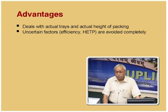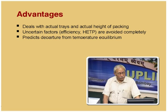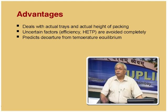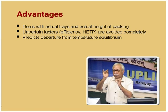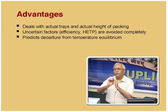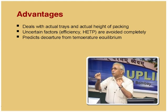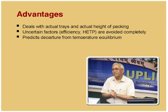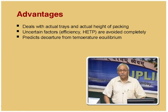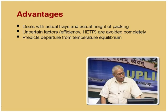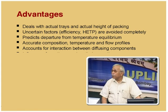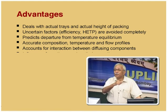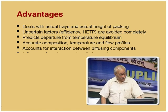Uncertain factors such as efficiency and HETP are avoided; the method predicts departure from temperature equilibrium, which is the actual case in practice. In actual columns, the vapour temperature is always different from the liquid temperature because there is no true thermal equilibrium. The rate-based approach is a rigorous method that accounts for interaction between diffusing components—diffusivities take care of efficiency differences between constituents. Influence of reactions can be handled correctly, and the method is predictive: once correlations exist for a component, mass and heat transfer coefficients can be predicted.